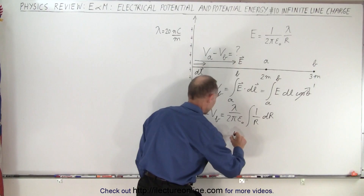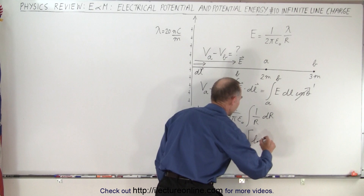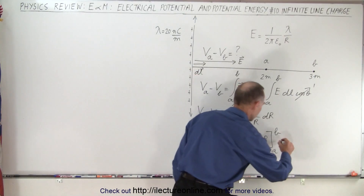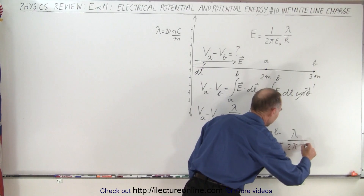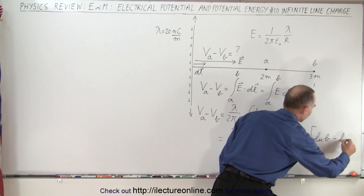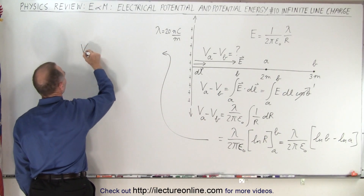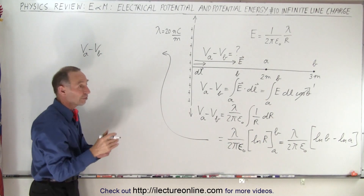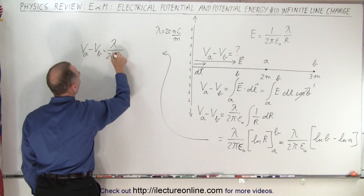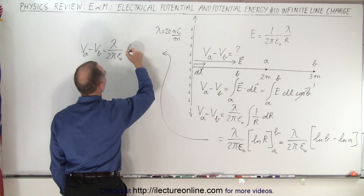This becomes equal to lambda divided by two pi epsilon-naught times the natural log of r. Evaluated, that becomes the natural log of B minus the natural log of A. So Va minus Vb equals lambda divided by two pi epsilon-naught times the natural log of B minus the natural log of A, which can be written as the natural log of B over A.